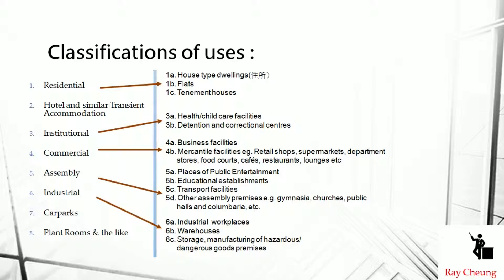You need to understand the so-called use classification. Every different use has a different requirement. In the Code of Practice for Fire Safety in Buildings, Table 211, there are eight classifications. The first is residential buildings. Another class is hotel. Commercial use covers restaurants, food courts, and stores. Assembly use covers cinemas and similar. There is also industrial, car park, and other classes.